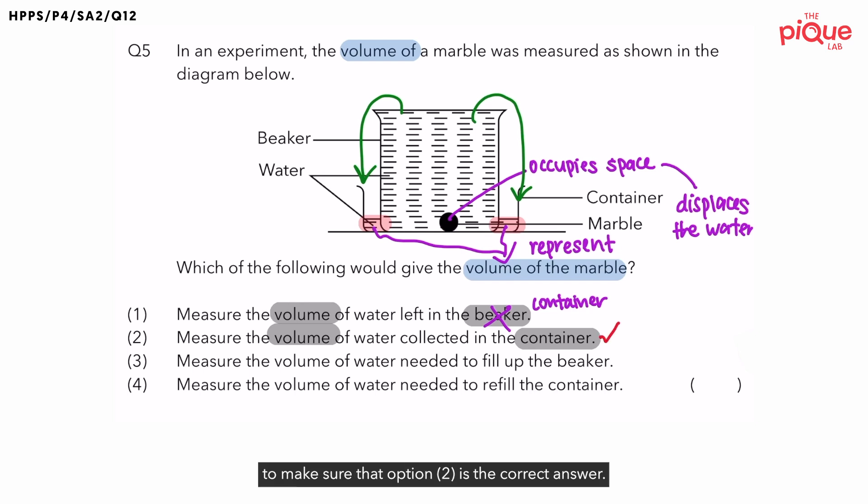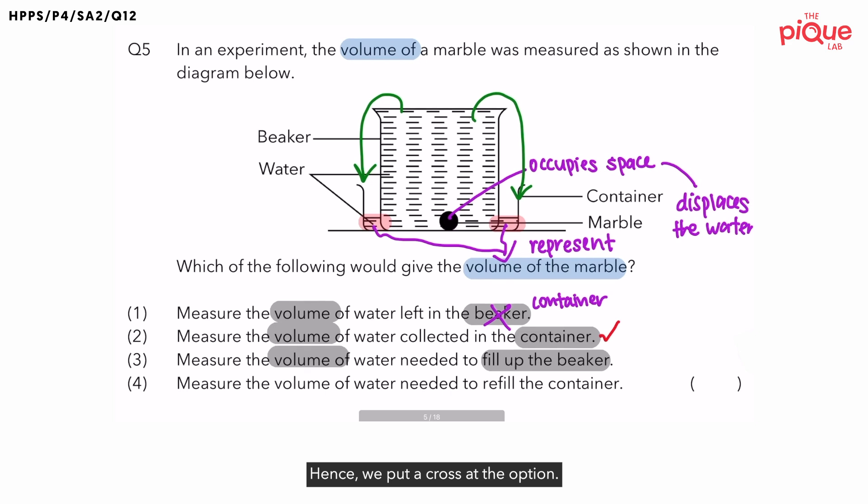Let's look at the other options to make sure that option two is the correct answer. Now, option three. Measure the volume of the water needed to fill up the beaker. Is this statement correct? No, it is wrong. Hence, we put a cross at the option. Now, last option. Measure the volume of the water needed to refill the container. Is that correct? No, this is wrong as well. So this helps us to confirm that the answer is actually option two.